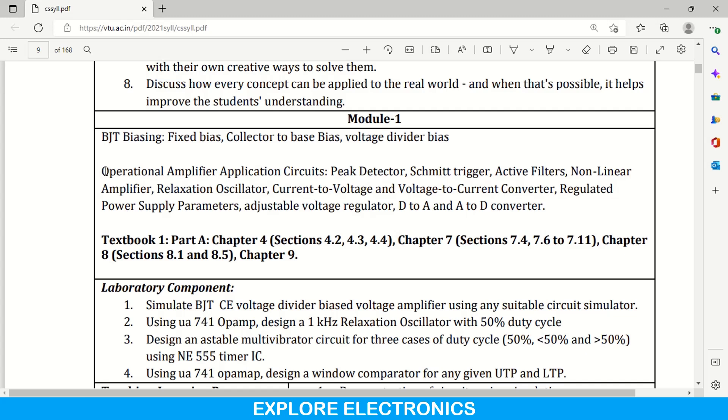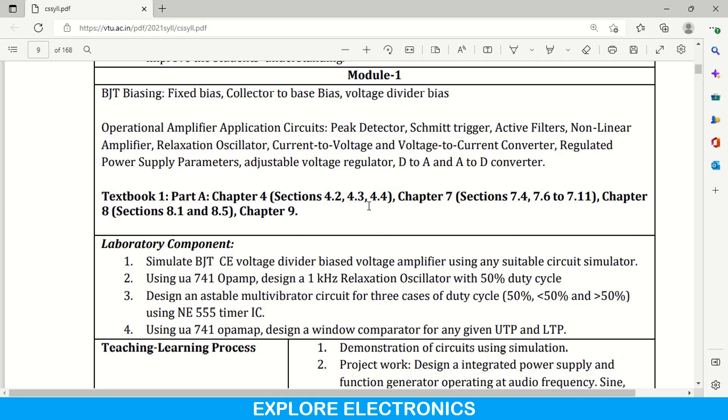Then operational amplifier application circuits. In the first semester or second semester you have seen op-amp circuits like inverting non-inverting amplifiers. So the next version of those op-amp circuits is discussed here. Peak detector, Schmitt trigger, voltage to current, current to voltage converter like that. This is what the first module is about transistors and op-amp. Here also clearly they have given which textbook and the part need to be considered to cover these portions. We need to refer textbook 1 and chapter 4, 7, 8, and 9 for this particular module.